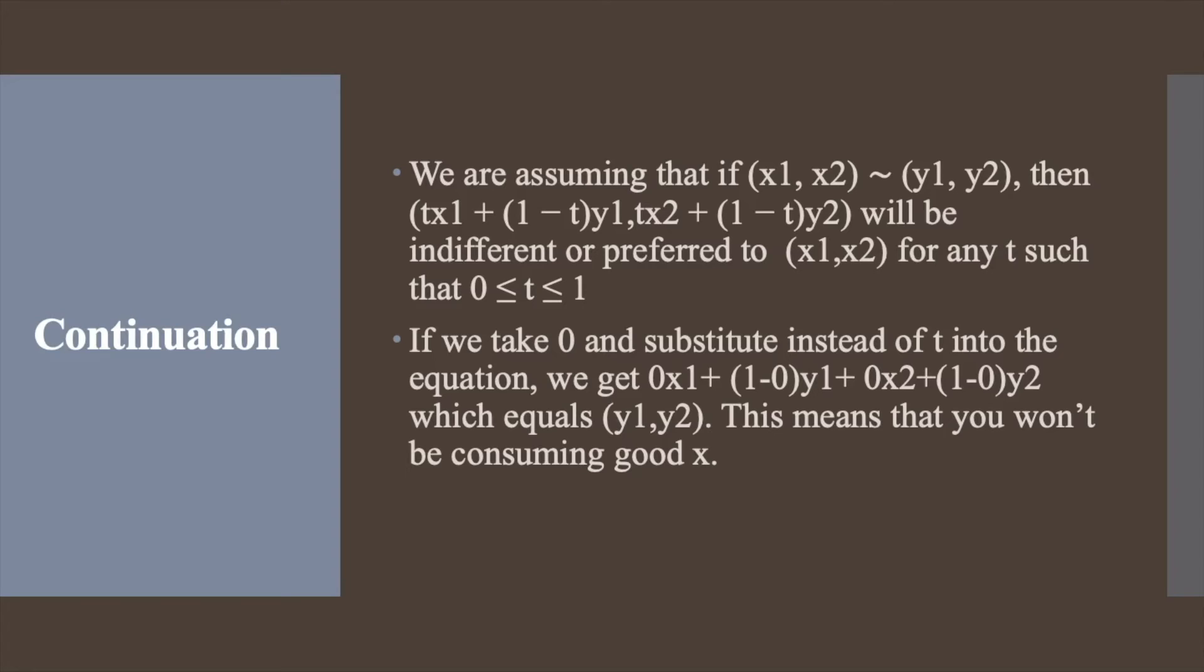For instance, if we take 0 and substitute instead of t into the equation, we get 0x1 + (1-0)y1 + 0x2 + (1-0)y2 which equals (y1, y2). This means that you won't be consuming good x. And going by the same terms, if we take the extreme case of 1, this means that you won't be consuming good y.